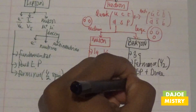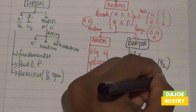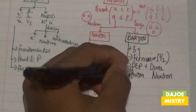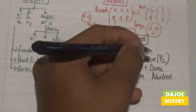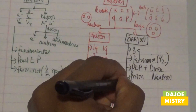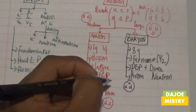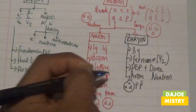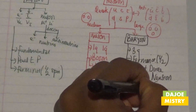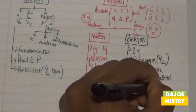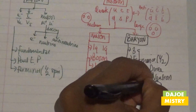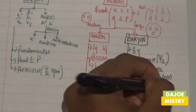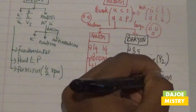Examples of baryons include protons and neutrons, which are all familiar to you. Protons consist of three quarks: two up quarks and one down quark, and protons can be either a proton or an antiproton. Neutrons also consist of three quarks — two down quarks and one up quark — forming either a neutron or an antineutron.